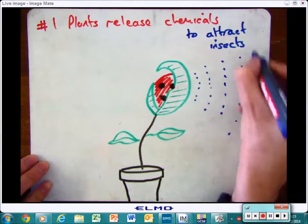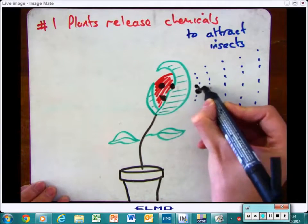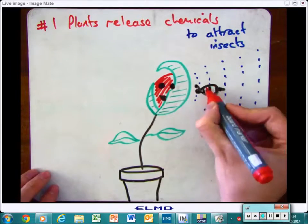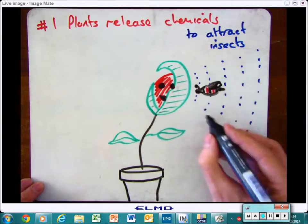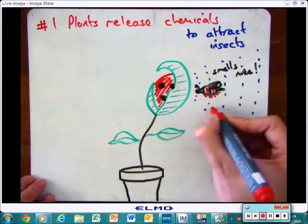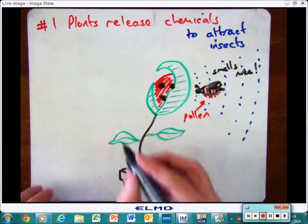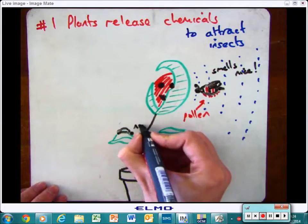For example, lots of flowers have got scents to them and that means that the plants are releasing smelly chemicals which attract the insects to them. The insects come to the flower looking for nectar and the pollen gets stuck to them, which they use to then go around to other plants and to pollinate them.